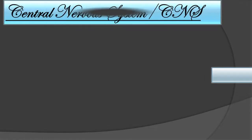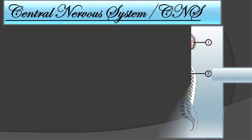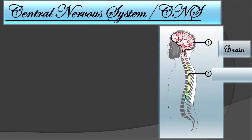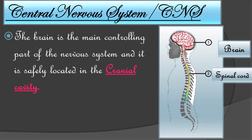The Central Nervous System consists of the brain and spinal cord — these are the two main parts of the CNS. The organization of the brain is extremely delicate and highly evolved, and the brain is the main controlling part of the nervous system. It is safely located in the cranial cavity.